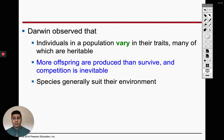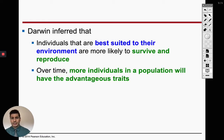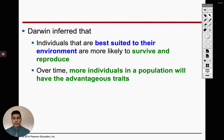More offspring are produced than survive — that's normal. The ones with the more advantageous traits are the ones that will reproduce, and what they're going to do is pass on their genes. Let me give you a human example of this and show you why humans are not a good example for natural selection.